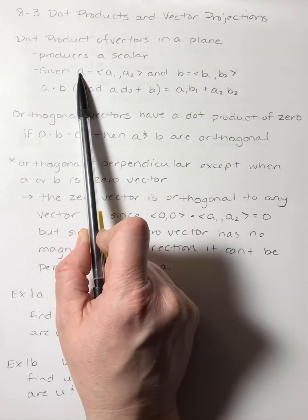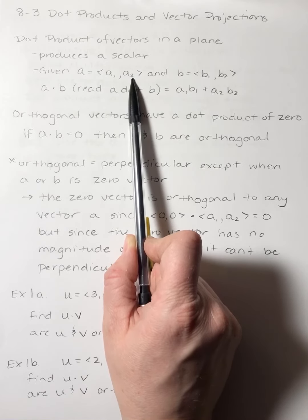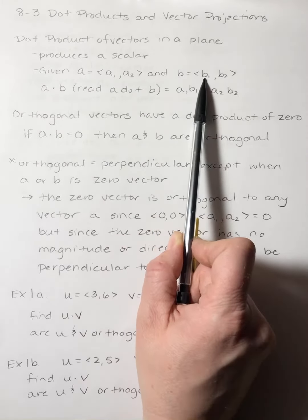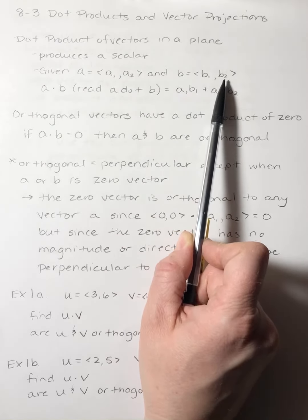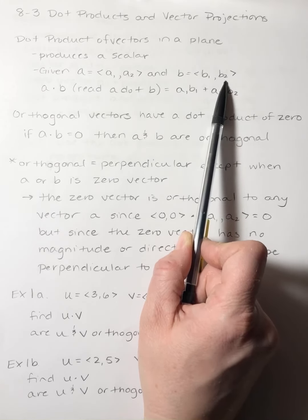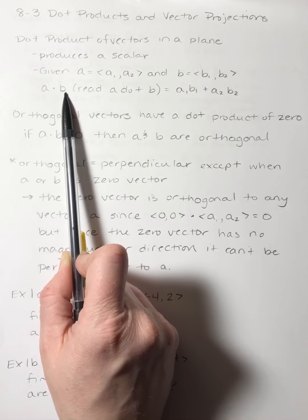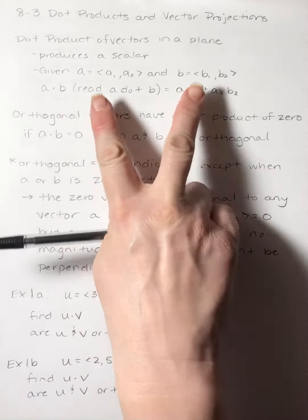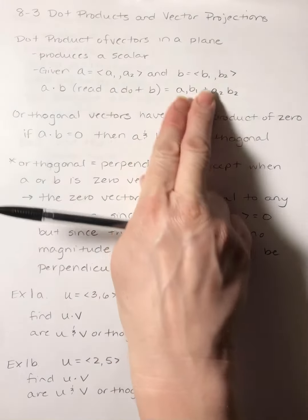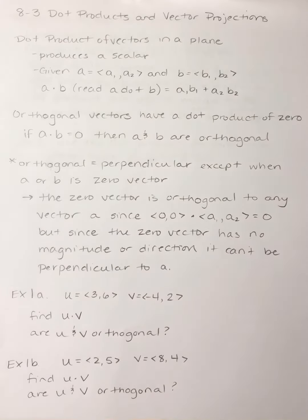Given vector a, which is a sub 1, a sub 2, and vector b, which is b sub 1, b sub 2, in order to find the dot product, which is read a dot b, you multiply your x's, you multiply your y's, and then you add them. That'll give you a scalar, a single number.